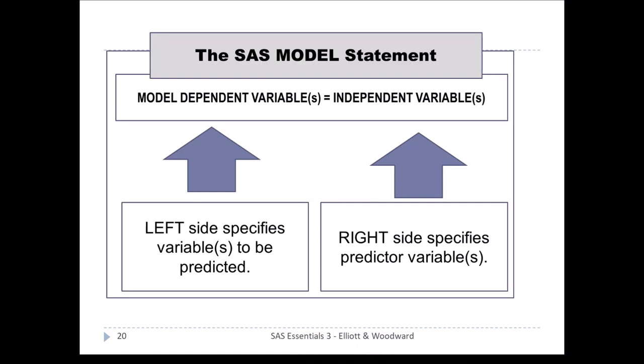To reinforce the SAS MODEL statement: the dependent variable is on the left side of the equals sign — that's what you're trying to predict — and the independent variables (predictors) are on the right side. You can have one or more independent variables on the right-hand side of the predictor equation.